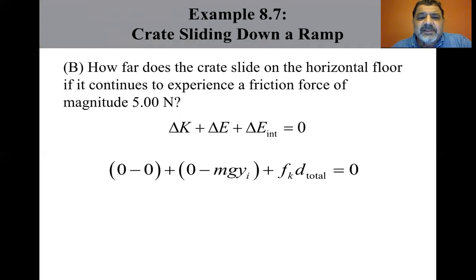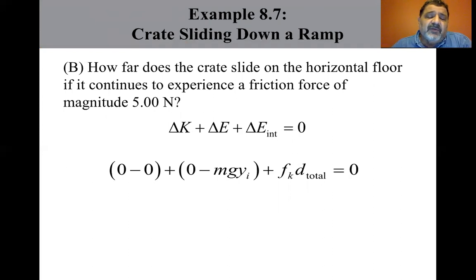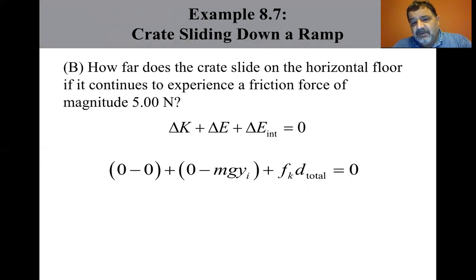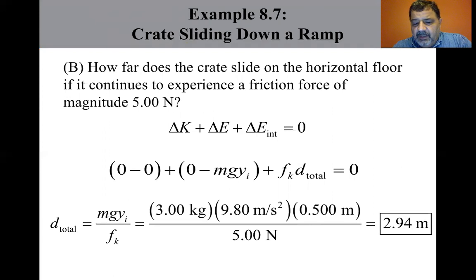The second term is delta U gravitational because they substituted Mgy. Notice we're talking about it starting at rest and ending at rest, so we're not concerned about kinetic energy in between — both initial and final kinetic energy equal zero. The change in potential energy corresponds to going down the ramp, 0.5 meters, and the internal energy is f_k times D_total. Substituting values gives 2.94 meters total. Subtracting the one-meter ramp length gives 1.94 meters that the crate slides across the floor.